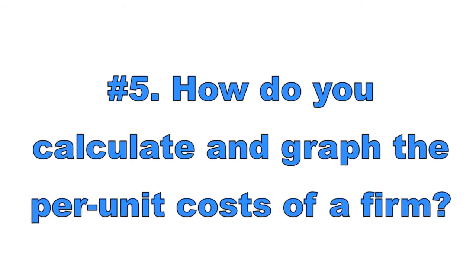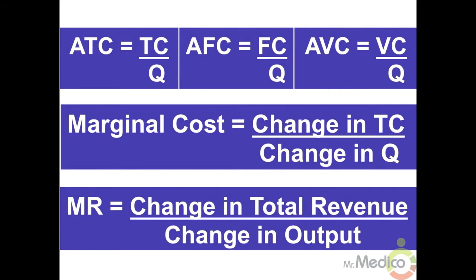Number five: how do you calculate and graph the per unit costs of a firm? Per unit costs are used to derive the average cost curves. Average fixed cost equals fixed costs divided by quantity, or average total cost minus average variable cost. Average variable cost equals total variable cost divided by quantity, or average total cost minus average fixed cost. Average total cost equals total cost divided by quantity, or average fixed cost plus average variable cost.